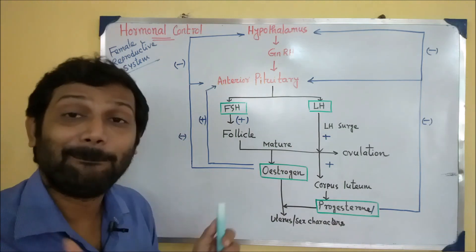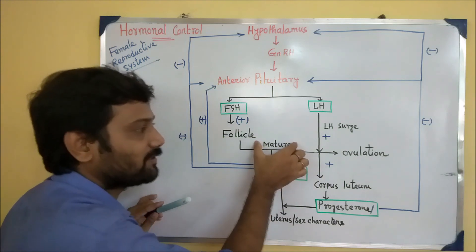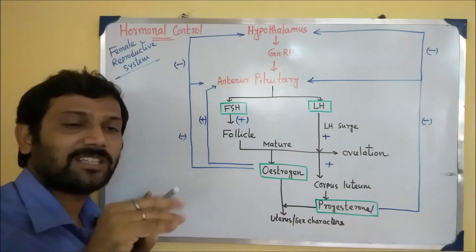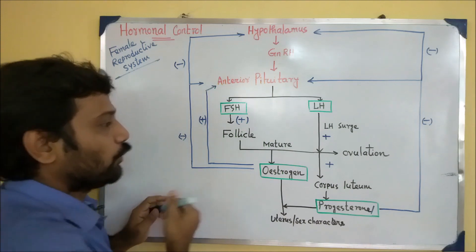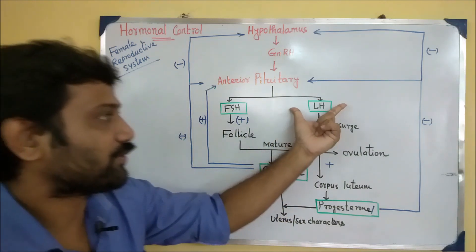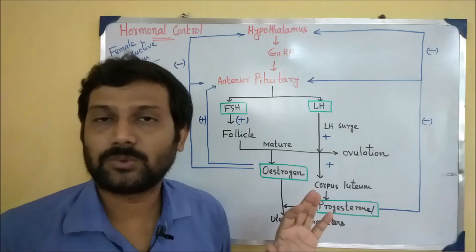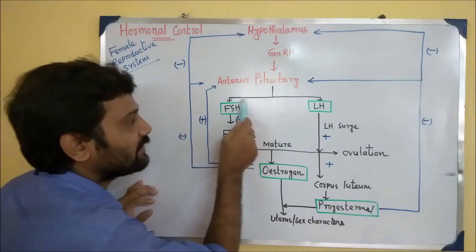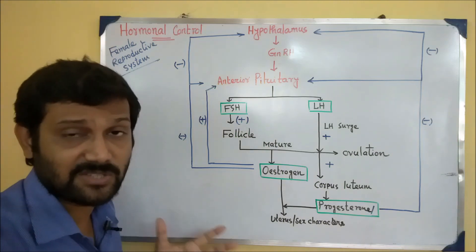FSH acts to stimulate the follicle, and the follicle will mature through the FSH hormone. LH, the luteinizing hormone — as we have seen before in the video — causes the formation of the corpus luteum, and then the progesterone hormone is secreted. This will help fertilize the follicle, and there is also estrogen hormone.